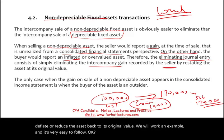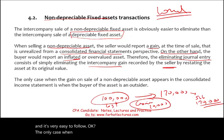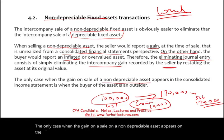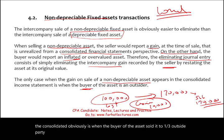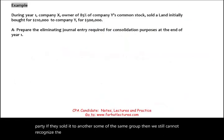The only case when a gain on the sale of a non-depreciable asset appears on the consolidated statements is when the buyer of the asset sells it to a third, outside party. If they sold it to another sub within the same group, we still cannot recognize the gain.